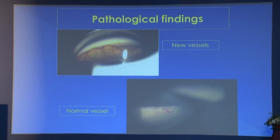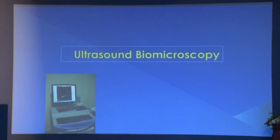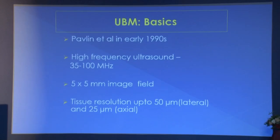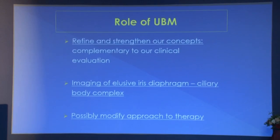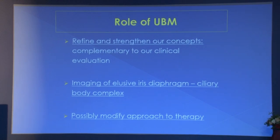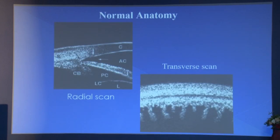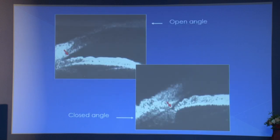Multiple iris processes and neovascularization of the iris can be seen — normal vessels differ in size, shape, and direction. Ultrasound biomicroscopy uses high frequency ultrasound and is performed in the lying-down position. UBM redefines and strengthens our clinical concepts — it can image the iris-diaphragm and ciliary body complex, which OCT cannot see because OCT is light-based while UBM is ultrasound-based. Anything behind the iris cannot be seen by OCT but can be seen by UBM.